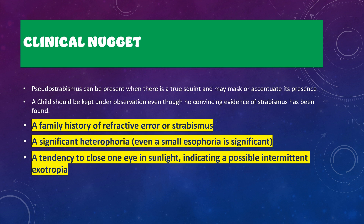An important clinical nugget: pseudo-strabismus, although a separate entity, can sometimes be present along with a true squint, and can mask or accentuate the true squint. Therefore, there are specific clinical scenarios where you must observe the child even when squint appears absent: first, when a family history of refractive error or strabismus is present; second, when significant heterophoria exists (even a small amount of esophoria is significant); and third, when a child has a tendency to close one eye in sunlight, which indicates possible intermittent exotropia. Thank you and have a nice day.